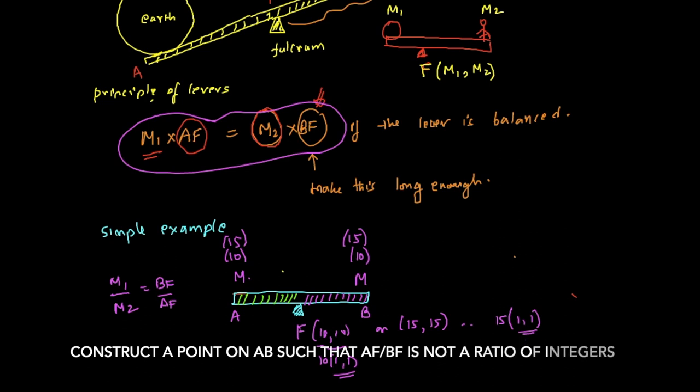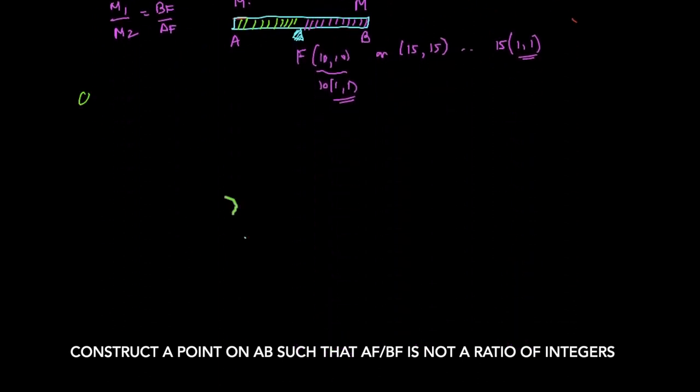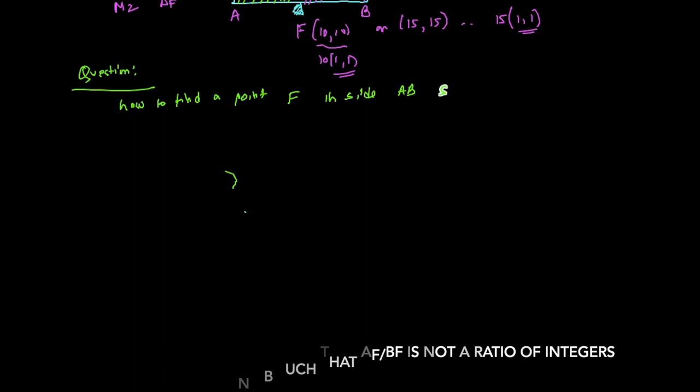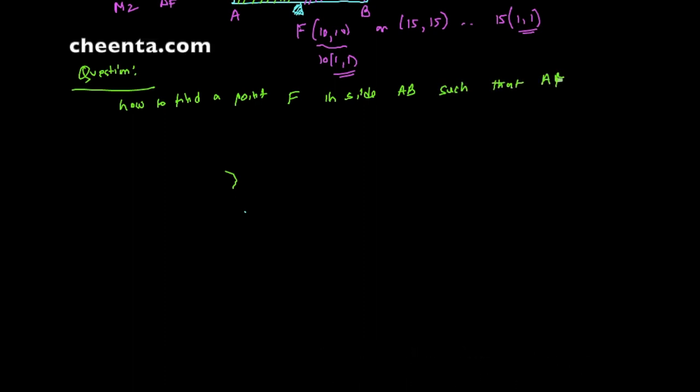We might go into that construction one more time, but first I want you to give it a try. Try to think how to find - so this is a question: how to find a point F inside AB such that AF over BF is not a ratio of integers.